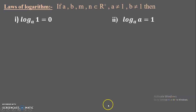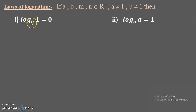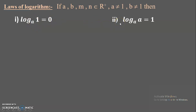Now let's see the different laws of logarithms. Consider a, b, m, and n belonging to the set of positive reals, where a should not equal 1 and b should not equal 1 — the base should not be 1. The first rule is: log 1 to any base a is always equal to 0. The second rule is: log a to the base a — when the number and base are the same — is equal to 1.